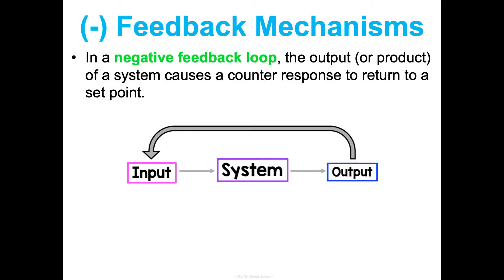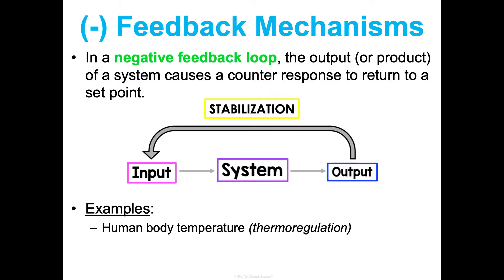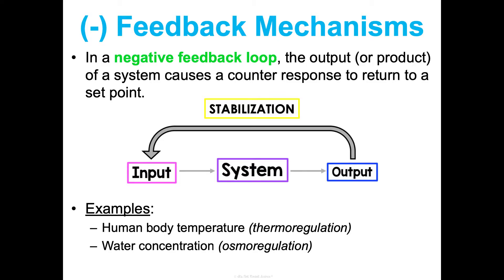Negative feedback loops are where the output causes a counter-response to return to some sort of set point — there is a stabilization. Think of human body temperature and thermoregulation. If I walked outside where the heat index is like 107 degrees, my body temperature would get very high, and my body would sweat in order to cool it down and lower that temperature again. The output tries to bring me back to my set point, my normal body temperature. This is how water concentration, osmoregulation, and blood sugar regulation work as well.